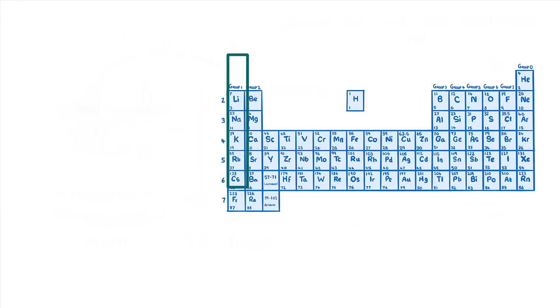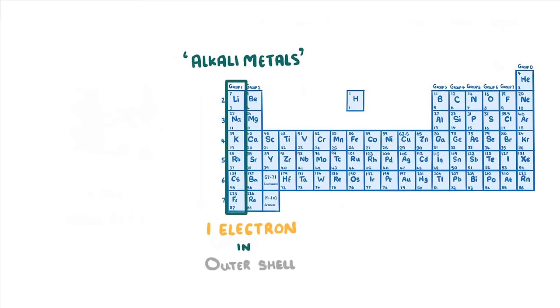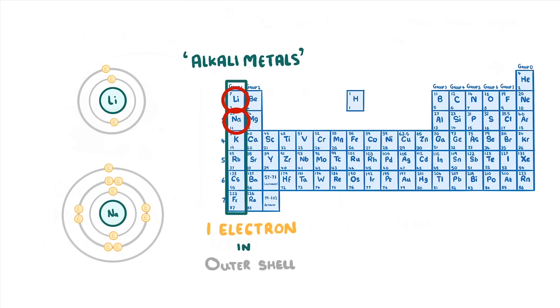So if we move over to the group 1 elements, which we call alkali metals, we can tell that they all have one electron in the outer shell. Whether it's lithium, which has 3 electrons overall, or sodium, which has 11 electrons overall. And it's this feature that gives all group 1 elements similar properties.